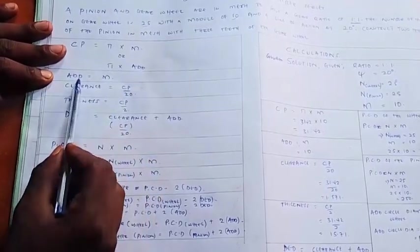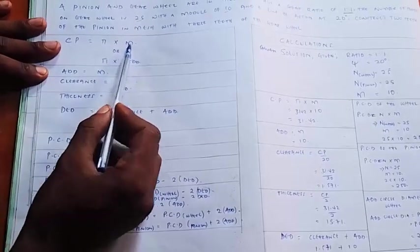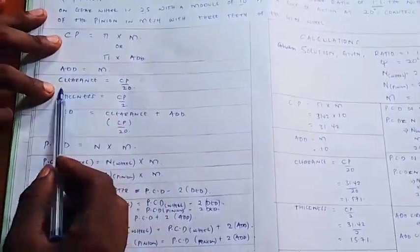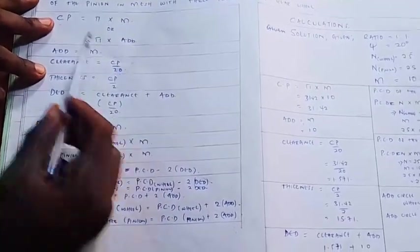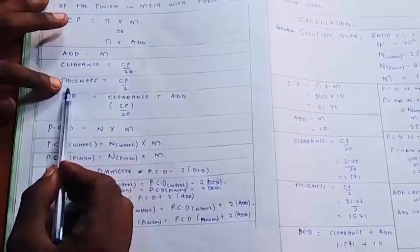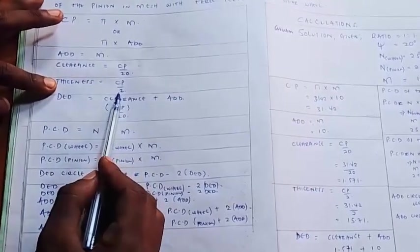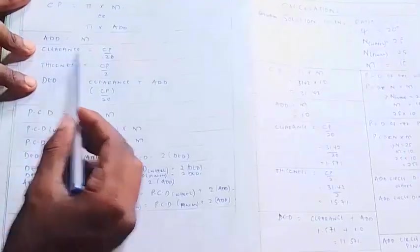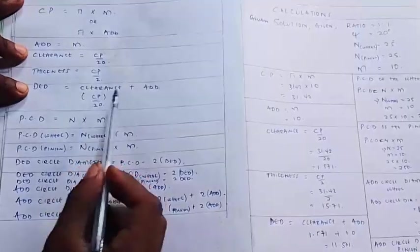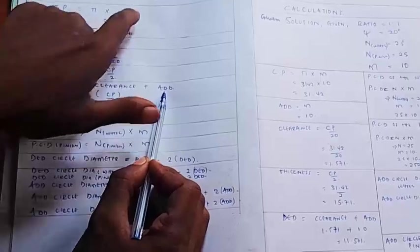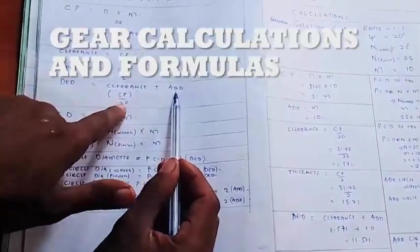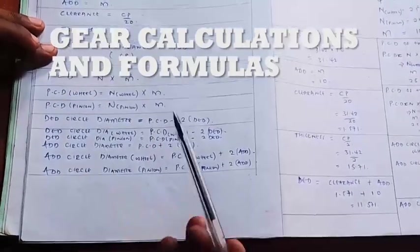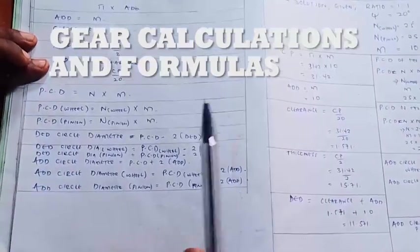You can substitute or replace module with addendum. The clearance is always equals to CP divided by 20. After finding CP using this formula, divide by 20 to find your clearance. Thickness is always equals to CP divided by 2. Dedendum equals clearance plus addendum. Since addendum equals module, and module is 10, addendum is 10. Substitute your values to find the dedendum.